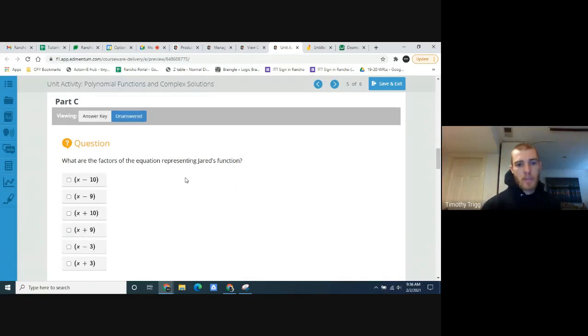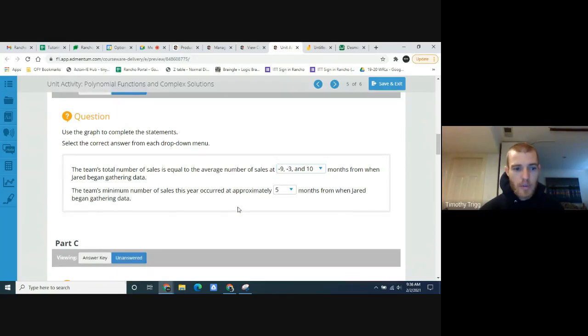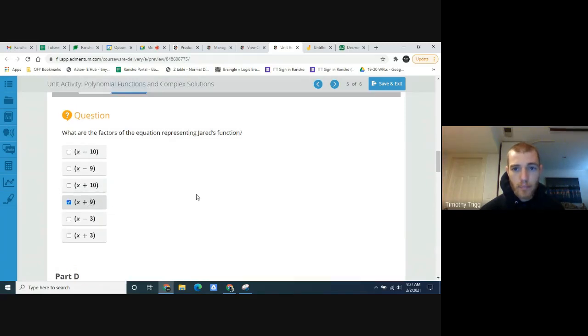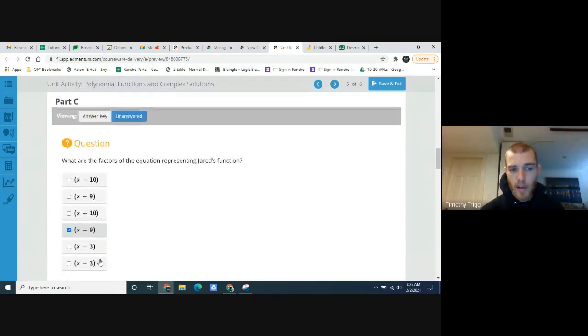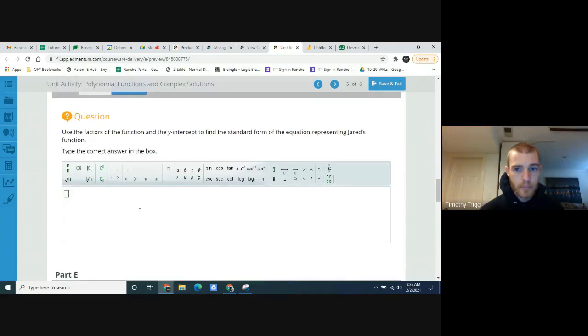What are the factors of this equation representing Jared's function? So since it had an x-intercept at negative 9, there's going to be an x plus 9 factor. Because if you replaced x with negative 9, that would make this 0. Okay. Negative 3 would produce which factor? And positive 10 would produce which factor? See if you can answer that. Hopefully you were able to see that the factors were x plus 9, x plus 3, and then x minus 10.